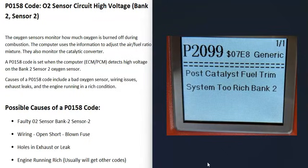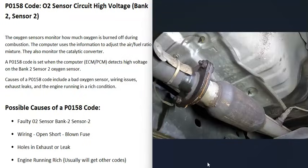For example, if you also got a P2099 code, post-catalyst fuel trim system too rich bank 2, or if you're getting misfire codes like a P0302, that could point to some issue with the engine running in a rich condition. If you are getting other codes, be sure to pay attention to that.